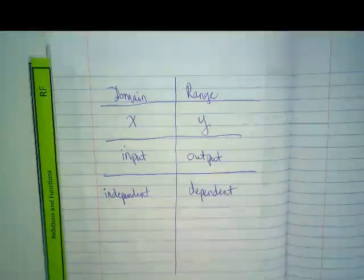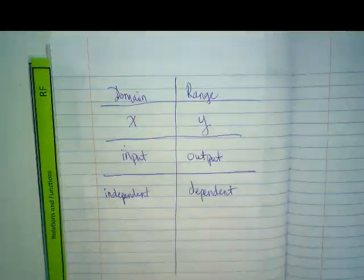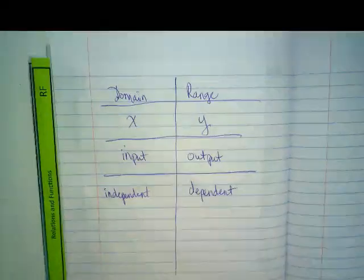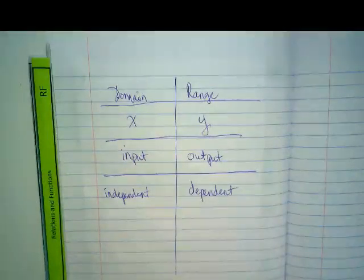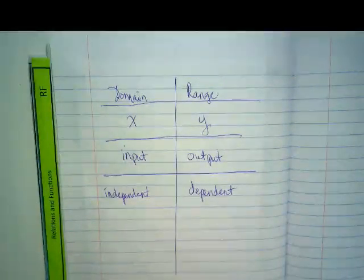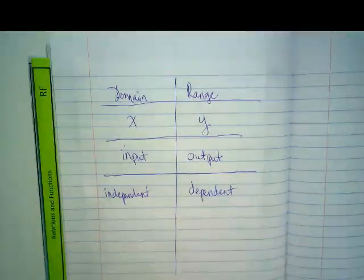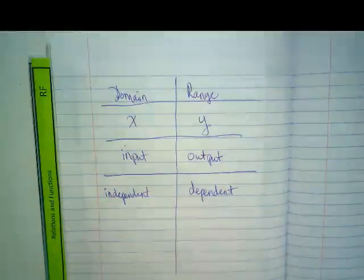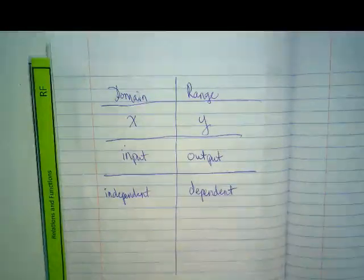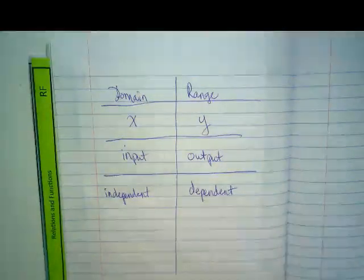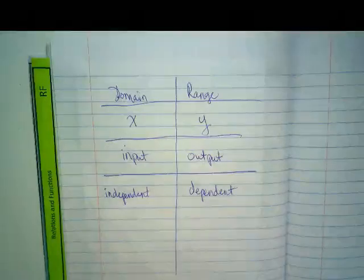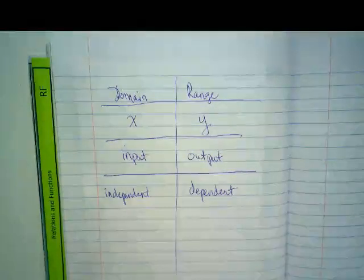We've talked a little bit about independent and dependent. Like whenever there's money involved, the total cost always depends on something else, right? There's other things, like I think about if we were going to graph kids' height.